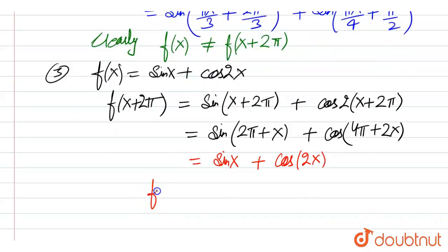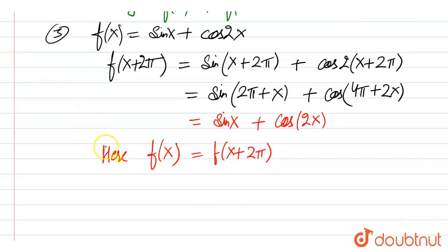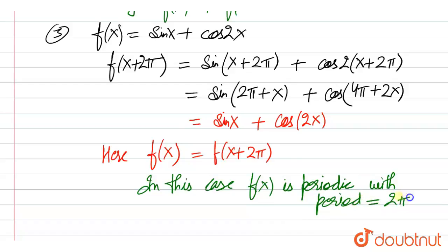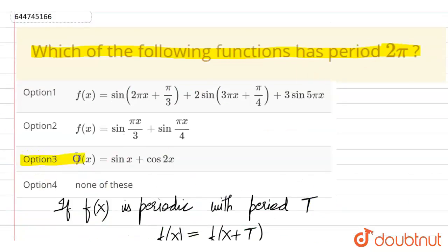So we can see that f(x) is equal to f(x + 2π). Therefore, f(x) is periodic with period equal to 2π. So the correct option is option number 3.